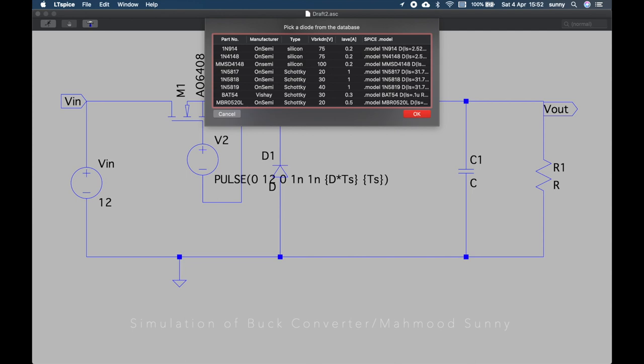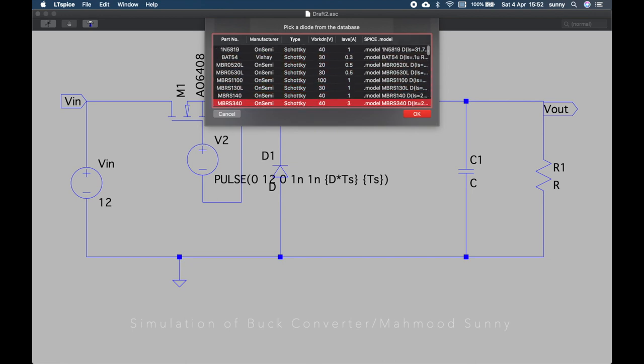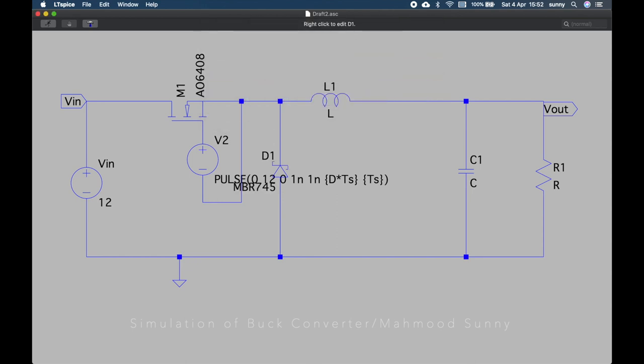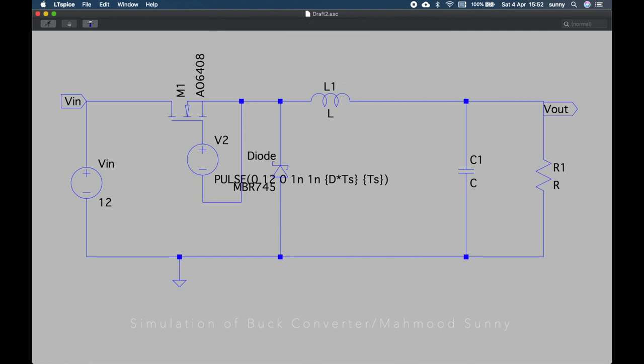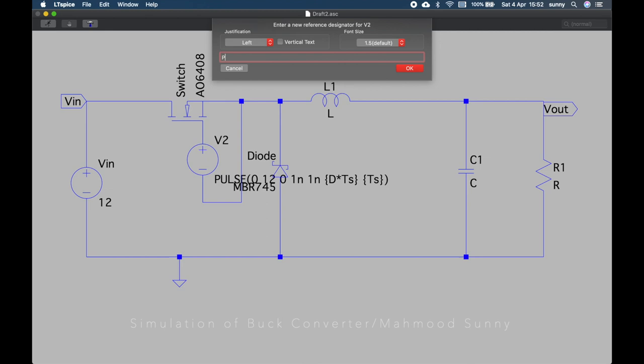Let's choose a diode. Let's choose a diode from the list. I would like to use the Schottky diode because of better performance. Let's see which can we choose. This seems okay. This is a good current level, 7.5 amps. Let's choose this one. Let's rename it as diode. We name this one as our switch pulse.